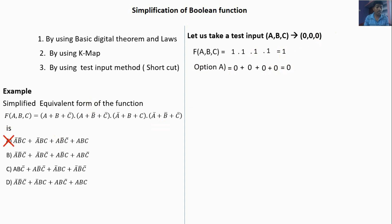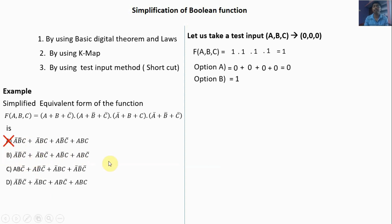Substitute in option B with input 0, 0, 0. A bar is 1, B bar is 1, C bar is 1. If any one term is high for a summation, the total output will be high. So no need to calculate the next term, because the first term is high. In summation, if any one of the inputs is high, the total term will be high.